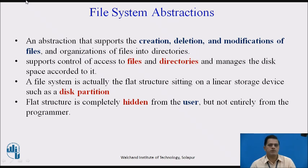Next, we go to file system abstraction. An abstraction that supports the creation, deletion, and modification of files, and organization of files into directories. It also supports control of access to files and directories and manages the disk space according to it. A file system is actually the flat structure sitting on a linear storage device such as a disk partition. This flat structure is completely hidden from the user, but not entirely from the programmer.